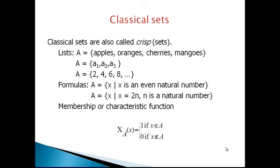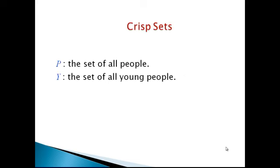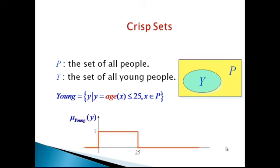Another representation of a classical set is the membership function or characteristic function. It is defined as: chi_A of X equals 1 if X belongs to A, and 0 if X does not belong to A. For example, P is a set of all people and Y is a set of all young people. Y equals {Y such that age of X is less than or equal to 25, X belongs to P}. Its membership function is shown like this.